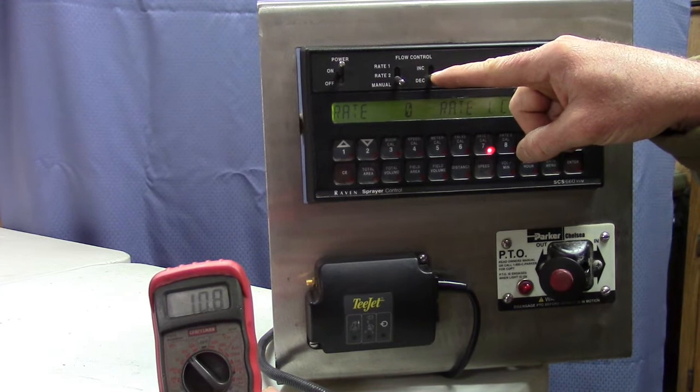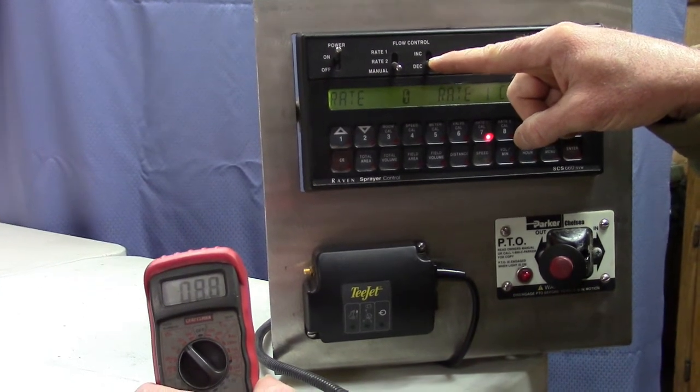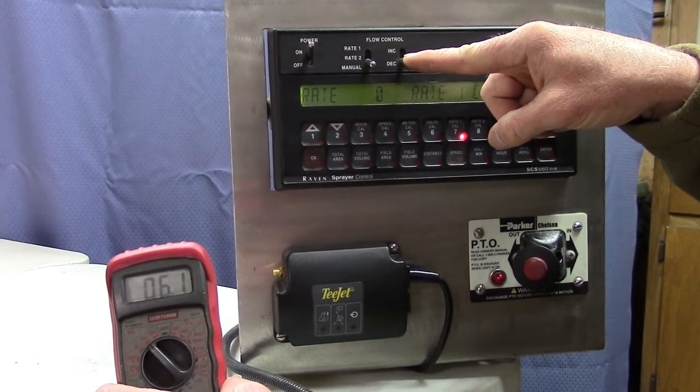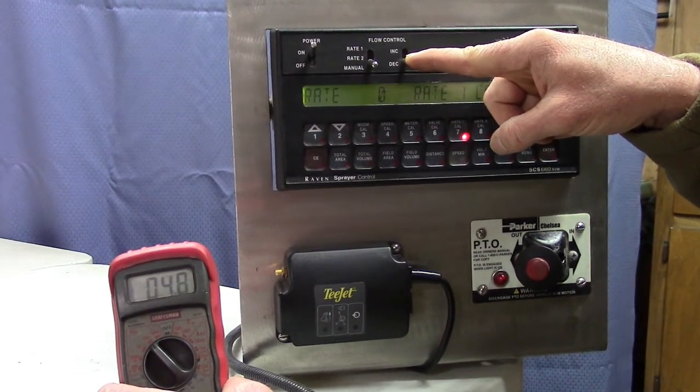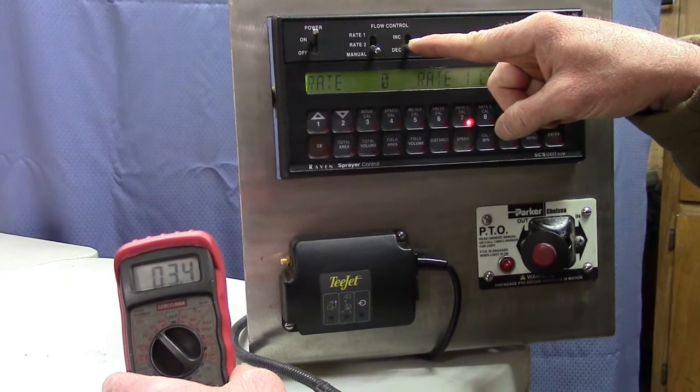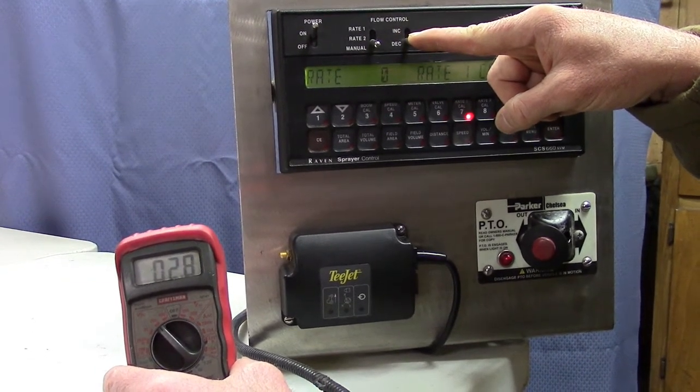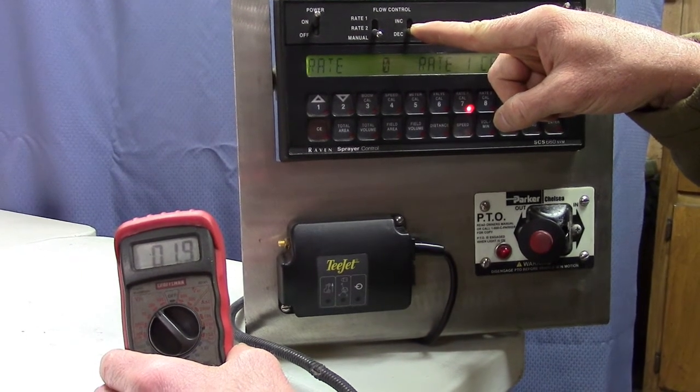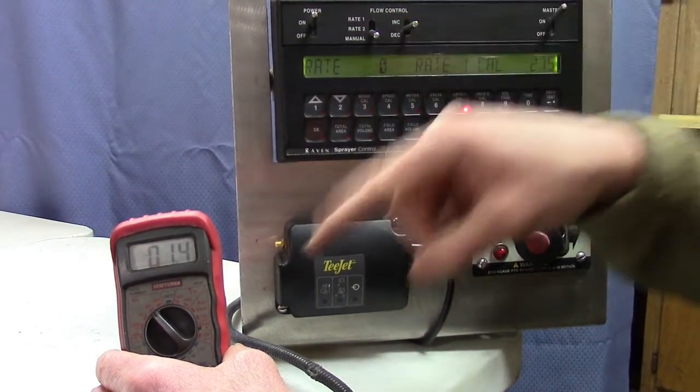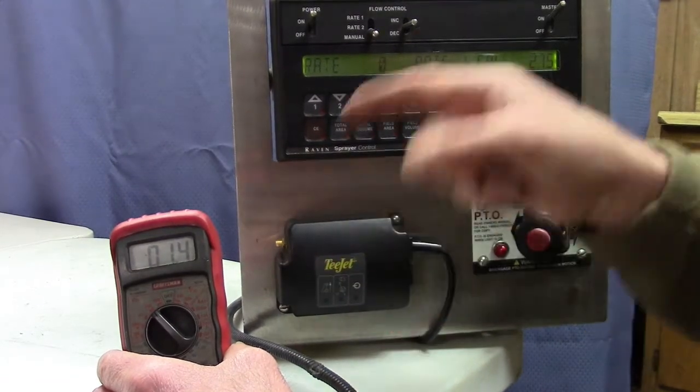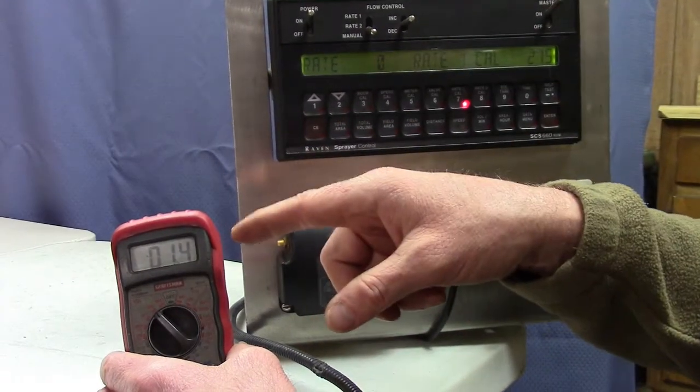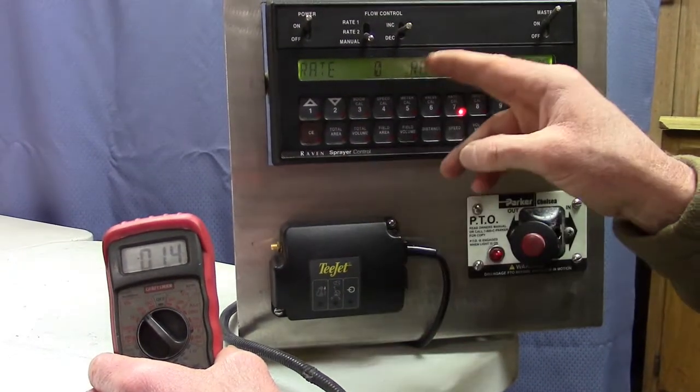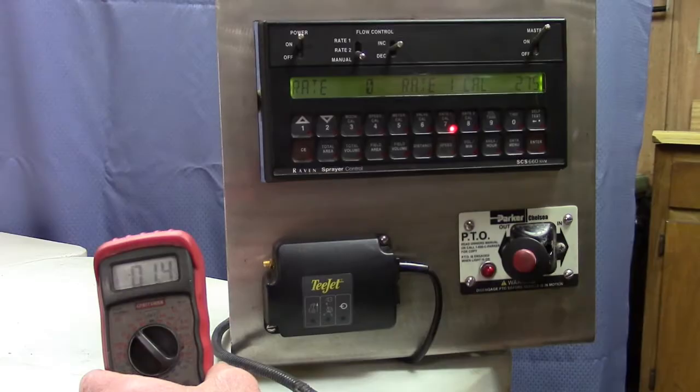And then I hold my decrease down and my voltage starts dropping. So what's happening is that plunger inside that valve is closing. This is the way that you tell if the problem is on the controller side. If this is working correctly, if you're holding the increase up and you're gaining voltage, you're holding a decrease down, you're decreasing voltage, then the controller is working the way it's supposed to. It's working correctly.